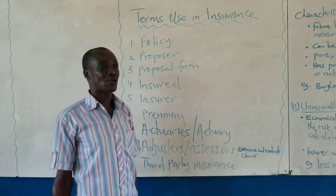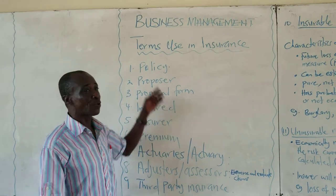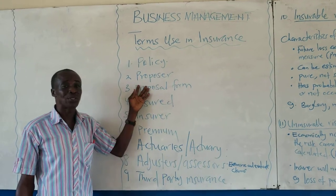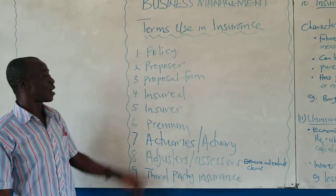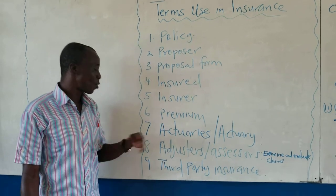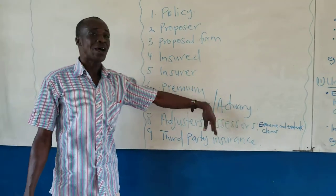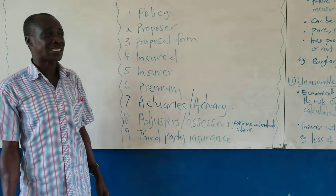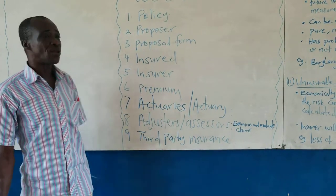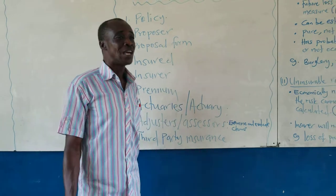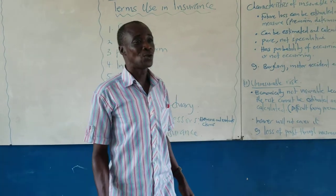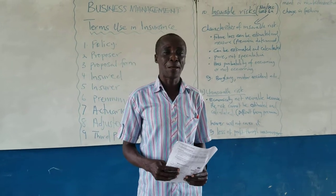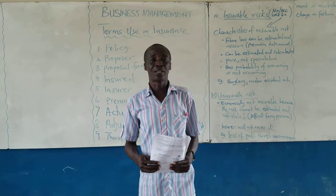We are looking at terms you come across in insurance. We shall be looking at: policy, proposal, insured, insurer, premium, actuaries, adjusters or assessors, third party, and so on. Let's start with the first one — the policy.